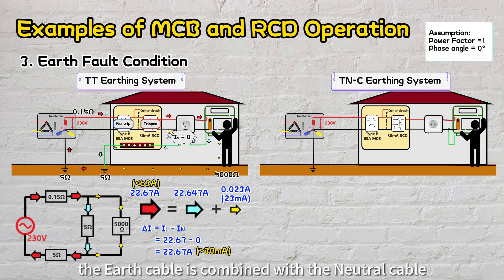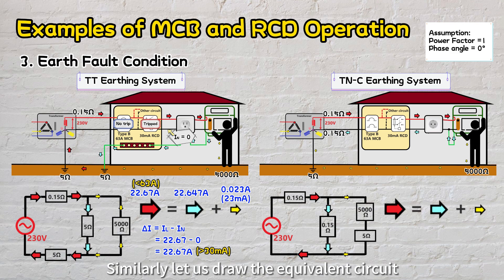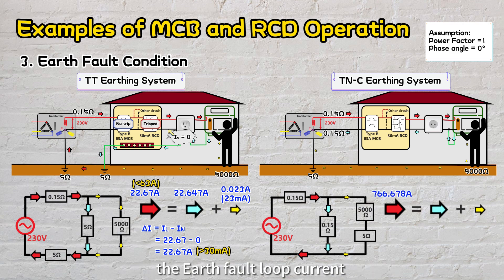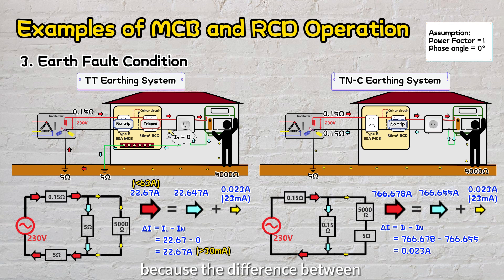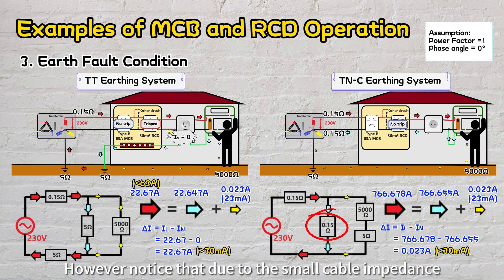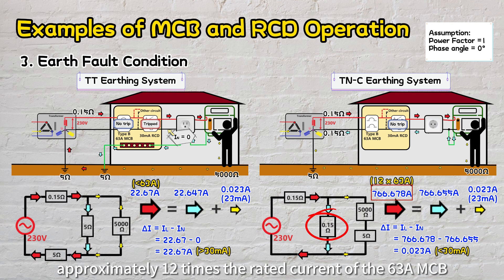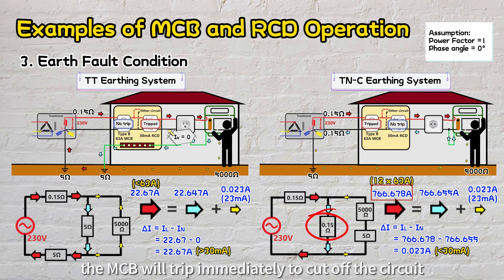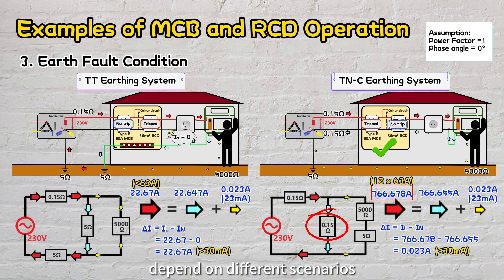In a TNC system, the earth cable is combined with the neutral cable. During an earth fault, the complete loop includes lower cable impedance. Using Ohm's law, the earth fault loop current is calculated as 766.678 amps, with approximately 0.023 amps flowing through the human body and the rest flowing through the combined neutral/earth cable back to the transformer neutral point. In this case, the RCD will not trip because the difference between live and neutral currents is only 23 milliamps, smaller than the 30 milliamps sensitivity threshold. However, due to the small cable impedance, the total earth fault current is approximately 12 times the rated current of the 63 amps MCB, so the MCB will trip immediately to cut off the circuit. We notice that in a TNC system, the MCB trips, but the RCD may or may not trip depending on the scenario.